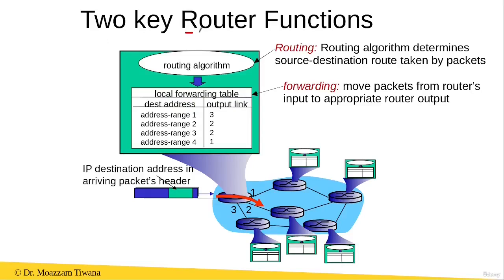Now the router performs two key functions. The first one is called routing and the second one is called forwarding. In order to understand these two functions, let us consider this scenario.